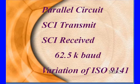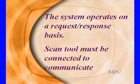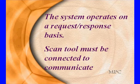It's a parallel circuit, meaning it's got two wires — an SCI transmit and an SCI receive. It runs at 62.5 kilobaud, and as we said, it's a variation of 9141. The system operates on a request-response basis.